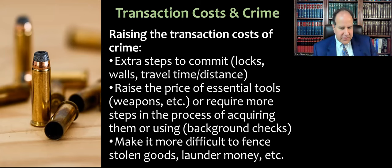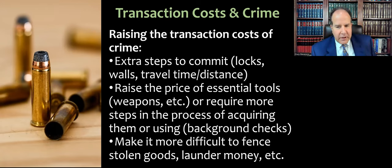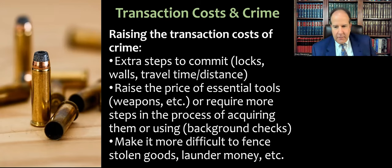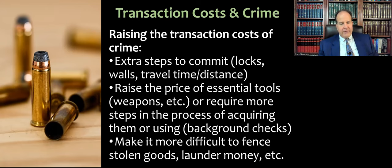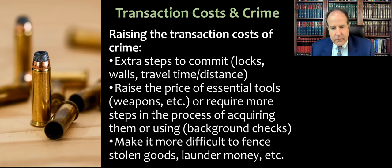Another way to raise the transaction costs of crime is to figure out what the essential tools are — like weapons, tools for picking locks, or the flat sticks used to open car doors — and basically raise the price or require more steps in the process of acquiring them. So background checks for weapons, waiting periods, or making it very difficult to buy certain tools unless you can acquire them on the black market, which involves a lot of searching.